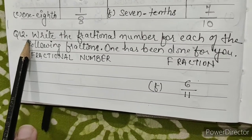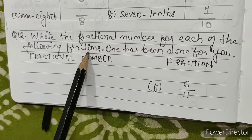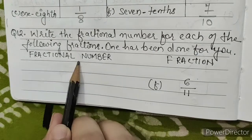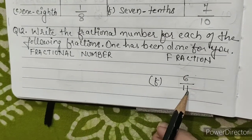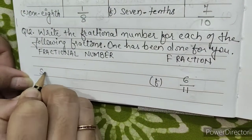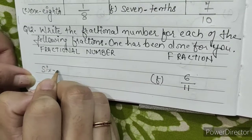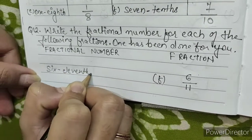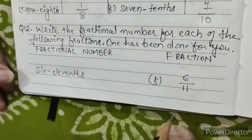Question number 12: write the fractional number for each of the following fractions. Fraction 6 by 11: we will write six elevenths. 6 elevenths equals the fraction 6 by 11.